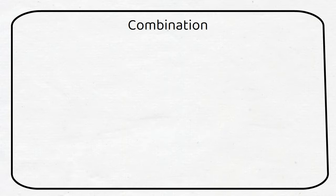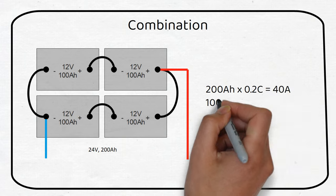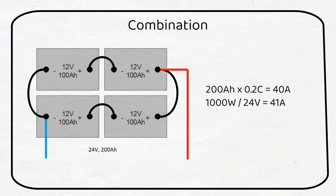We can add series and parallel together. If you have four 12 volt 100 amp hour lead acid batteries and a 1000 watt 24 volt inverter, you can make one big 24 volt 200 amp hour battery. If we calculate the C-rate for the system it would be 200 amp hours times 0.2C is 40 amps. The maximum current demand from the inverter will be 1000 watts divided by 24 volts is 41 amps. This is a properly sized system that will give you a long battery lifespan.